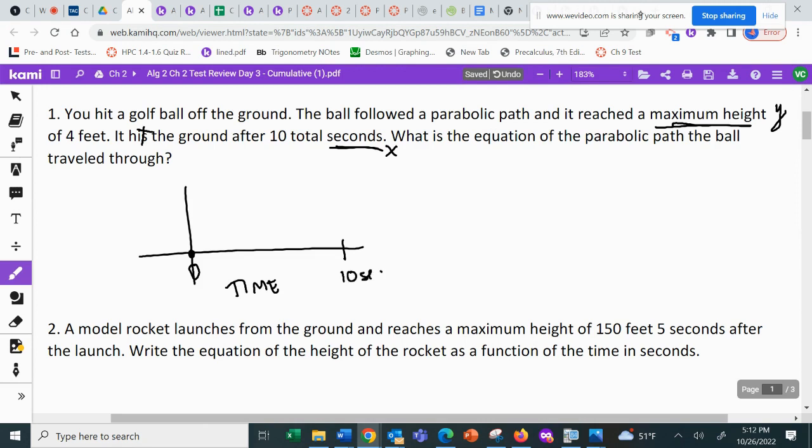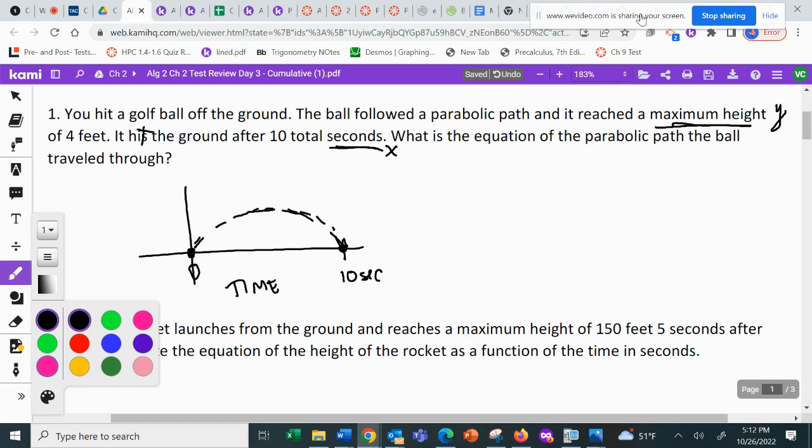And it hits the ground after 10 total seconds. So over here at 10 seconds, it's going to be on the ground again. So what we have here are X intercepts, and then it follows a parabolic path. That might not have been, that might be too circular, but it's close enough.